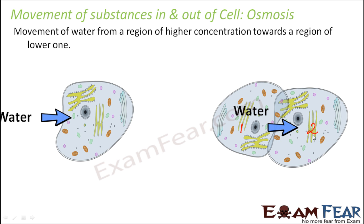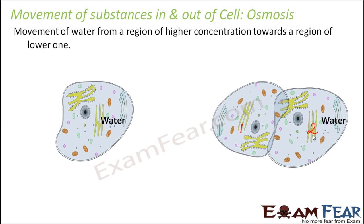Whenever water enters a cell, the cell starts swelling up — just like a balloon. If you keep putting water into a balloon it swells, and if you take water out it contracts. Similarly, if water moves inside a cell, the cell swells up; if water comes out of the cell, it reduces in volume. Conversely, if water concentration is higher inside the cell, it will start flowing out to the region of lower concentration.